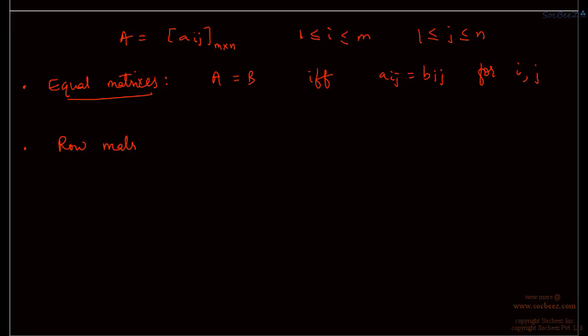The first type is a row matrix. A row matrix is a matrix which has only one row. From the name itself we can easily understand. So the order is nothing but 1 cross n — there is only one row and in general n columns. Something like 1, 2, 3, 4 — this is a row matrix.